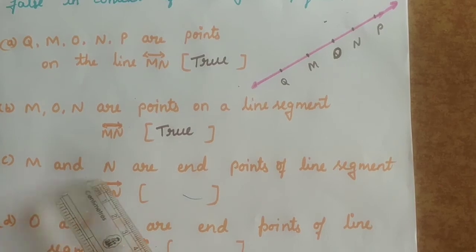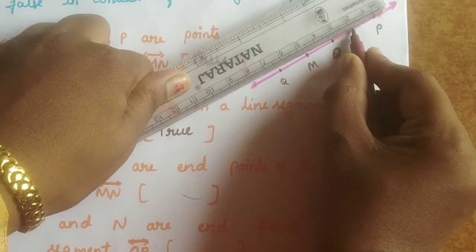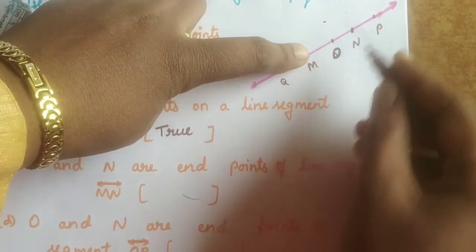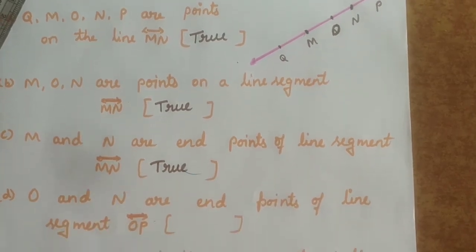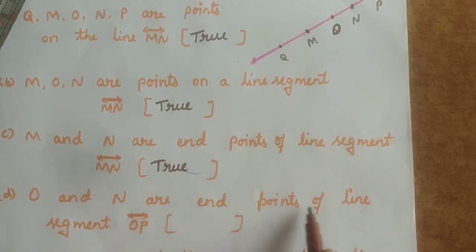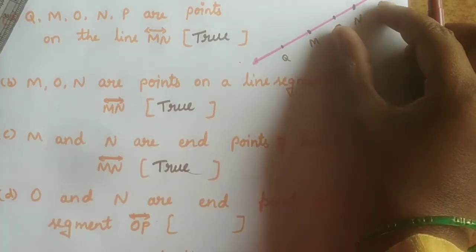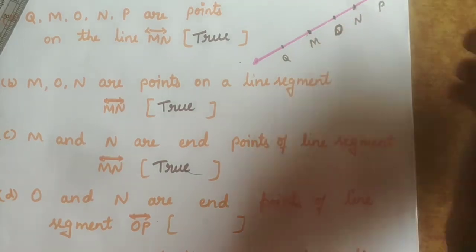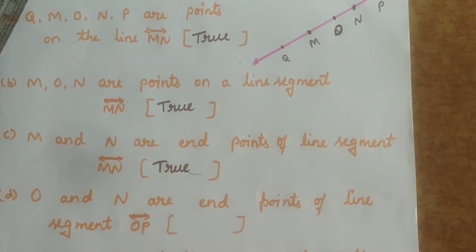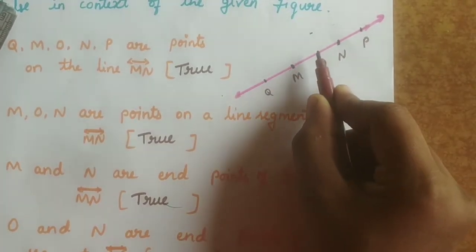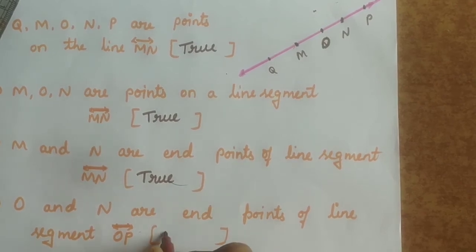Statement C: M and N are end points of line segment MN. This is the line segment MN, and M and N are the end points — so this statement is also true. Statement D: O and N are end points of line segment OP. For line segment OP, the end points are O and P — not N. So this statement is false.